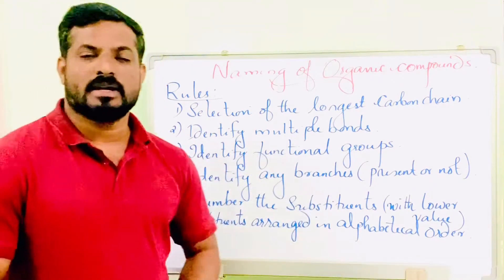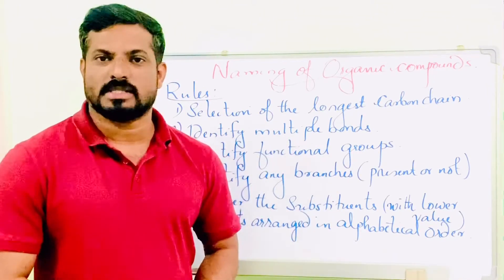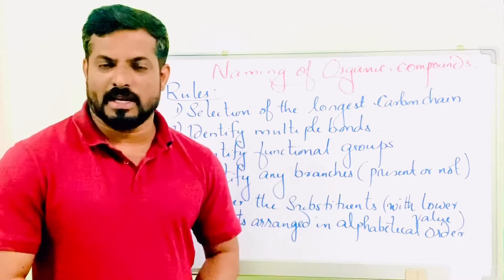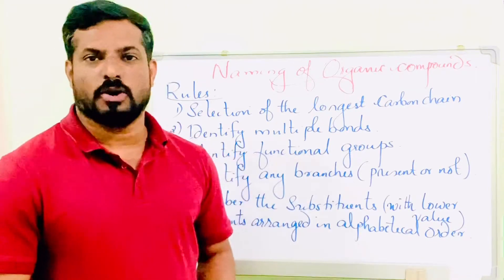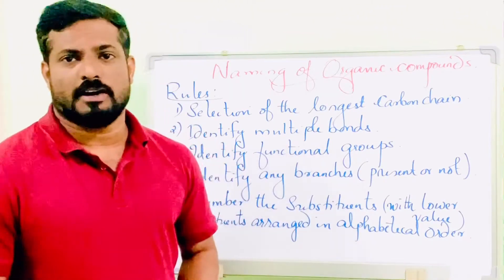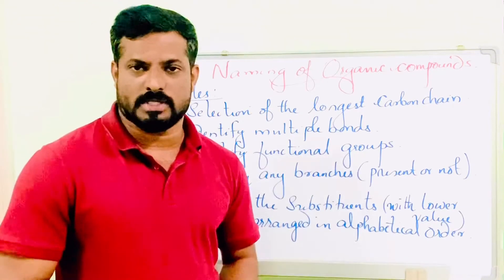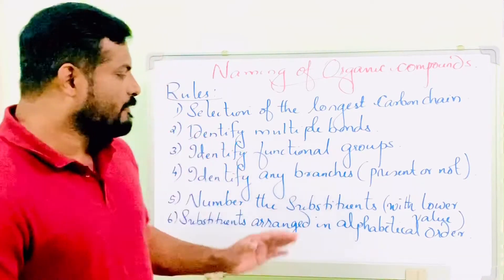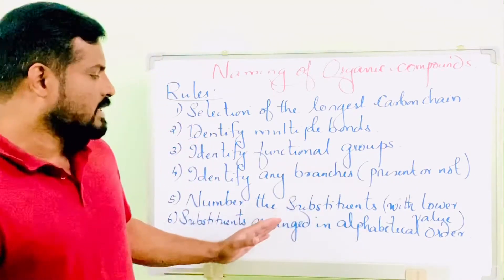Rule number five: number the parent chain. While numbering the parent chain, always remember the substituents must get the least number. That means, whether numbering left to right or right to left, the substituents must possess the lower value. If more than one substituent is present, write them in alphabetical order. For example, if two substituents are there, first write both substituents then find out which comes first alphabetically — that substituent must be written first.